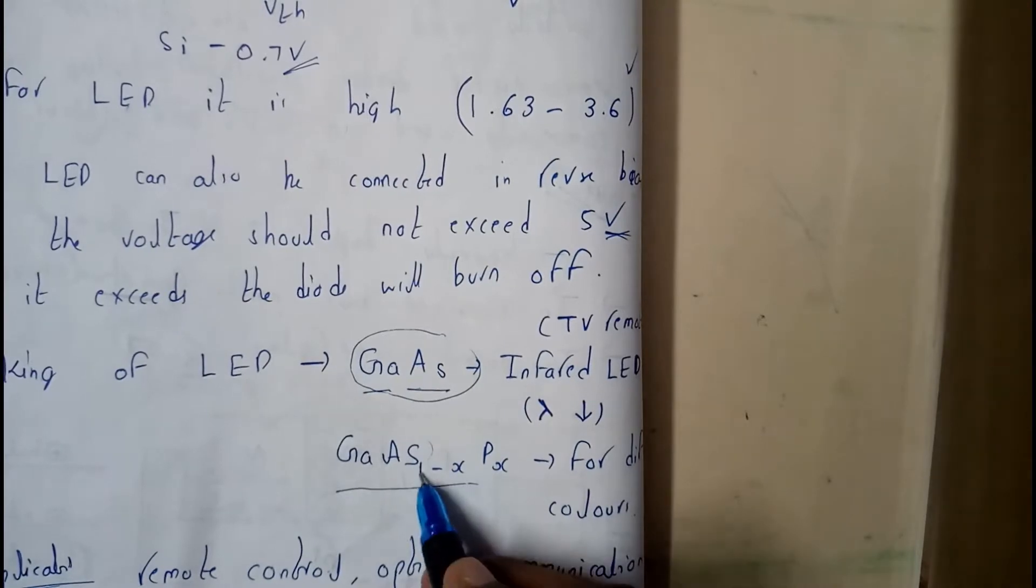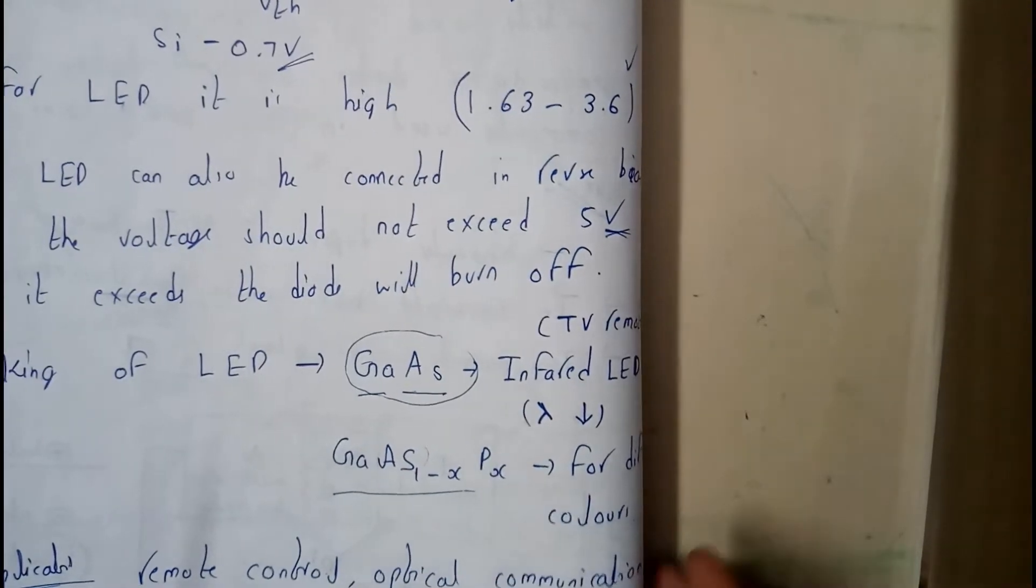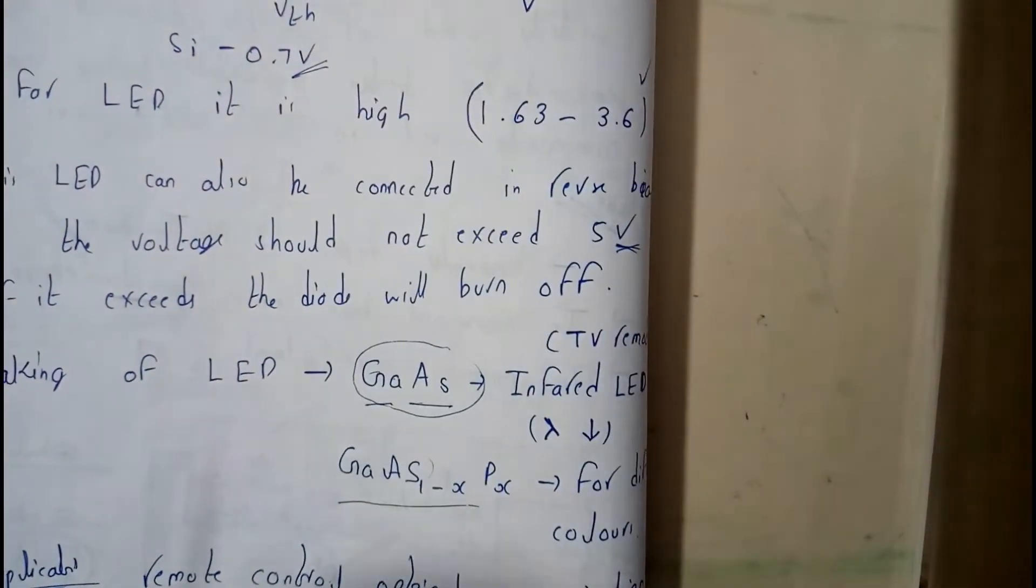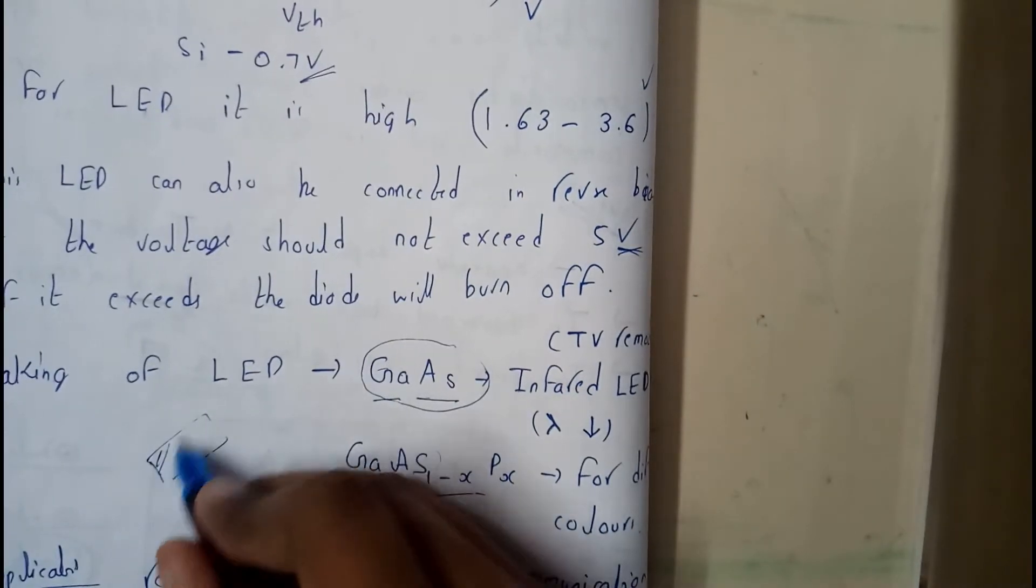Basically the normal mobile screens and everything are made with this compound - gallium arsenide one minus x phosphate x. Two for different colors - as if you observe our TV it's going to have different different colors.